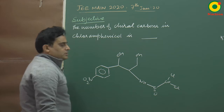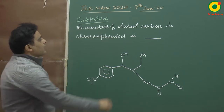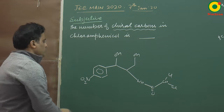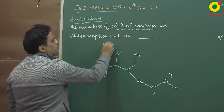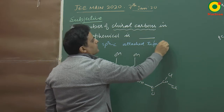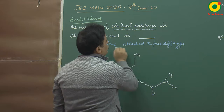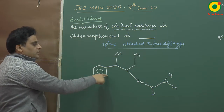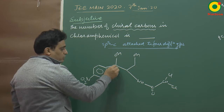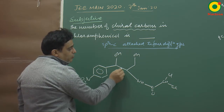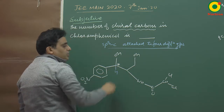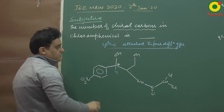This is chloramphenicol. What is a chiral carbon? A chiral carbon must have four different groups attached to it. On the benzene ring, we check each carbon to determine if it qualifies as a chiral carbon.